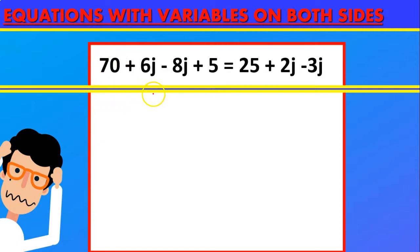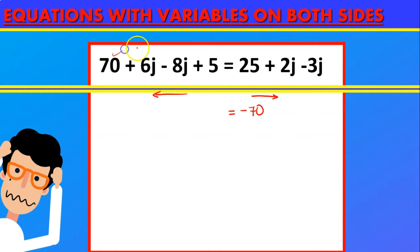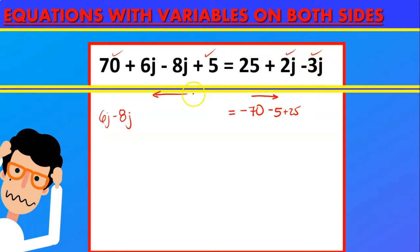So let's try moving everything that has a letter to the left side and everything that has a number to the right side of the equal sign. So 70 — because it's adding, whenever we move it to the other side it's going to get a subtraction — so minus 70. Now we have plus 6j minus 8j, we'll leave them for now. Then plus 5 we move to the right side, so minus 5. And 2j and 3j we move to the left side, so minus 2j and plus 3j.